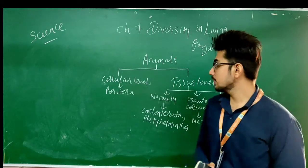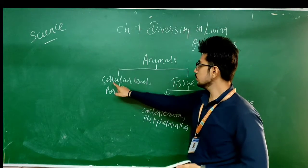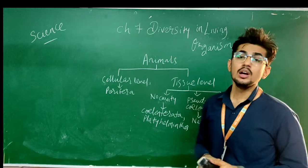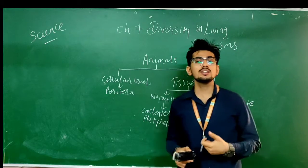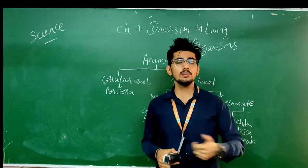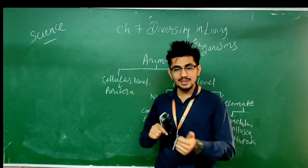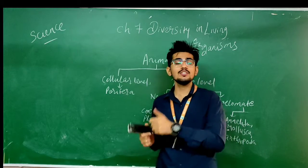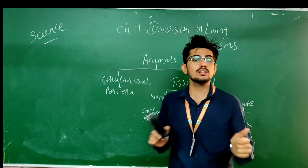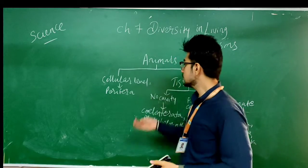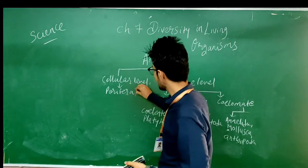Now if we start with Animalia, we are going to see the cellular level organisms first — organisms which are not having tissues in their body, which are only made up of cells. They are multicellular, but they are only cells because the tissue is not differentiated. This kind of animal is known as Porifera.